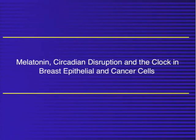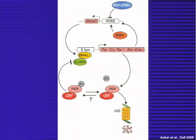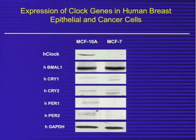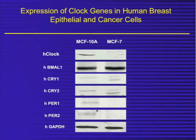I want to tie this into our story of melatonin, circadian disruption, and the clock in breast epithelial and breast cancer cells. Richard Stevens already showed you the circadian clock. There are a number of important components, and nobody really knew where to begin looking with regards to anti-cancer effects. We decided first to look at whether clock genes are expressed in normal breast epithelial cells and breast cancer cells. In MCF10A normal human breast epithelial cells, we see clock genes — BMAL1, the cryptochrome genes, and the period genes — all expressed.